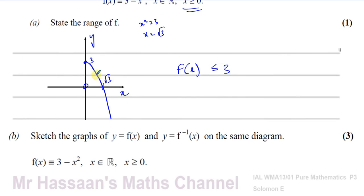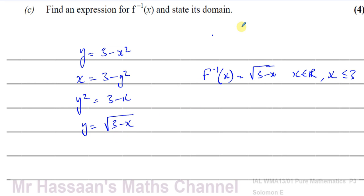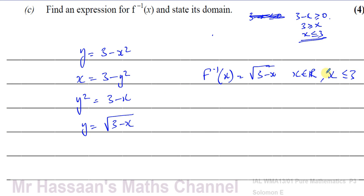So the inverse function is f⁻¹(x) = √(3 - x), with domain x ≤ 3. We know this from the fact that the domain of the inverse equals the range of the original function. We can also verify: 3 - x must be ≥ 0, which gives x ≤ 3. Always state the domain when finding an inverse function, especially when the original domain was restricted.